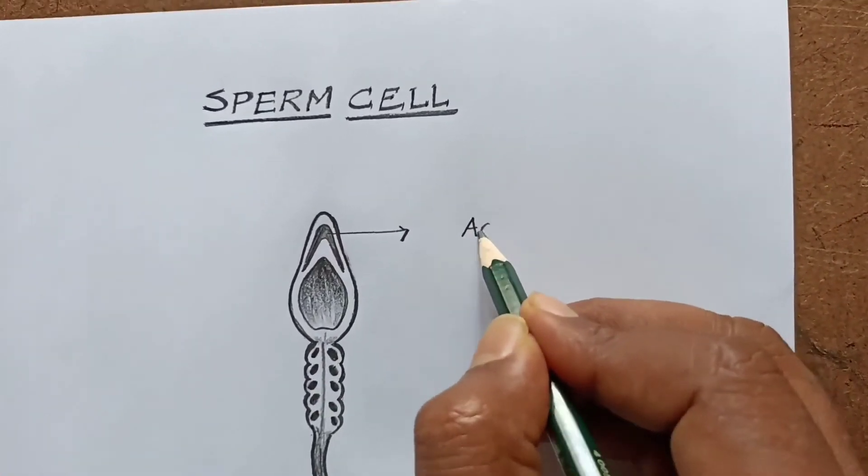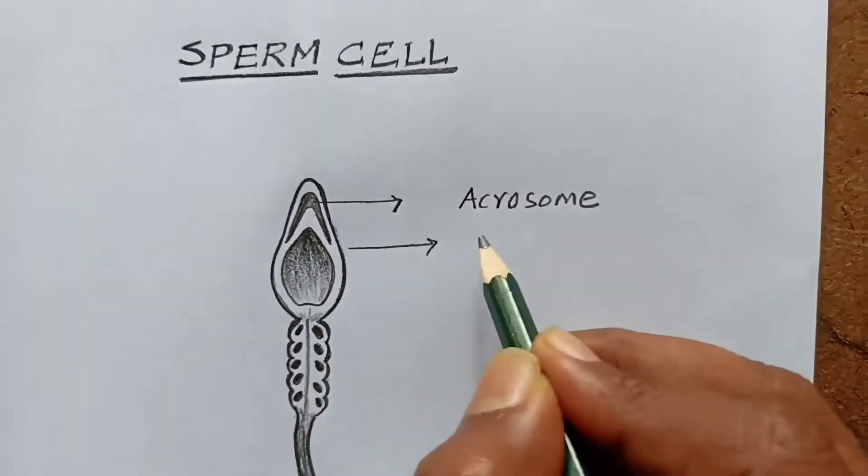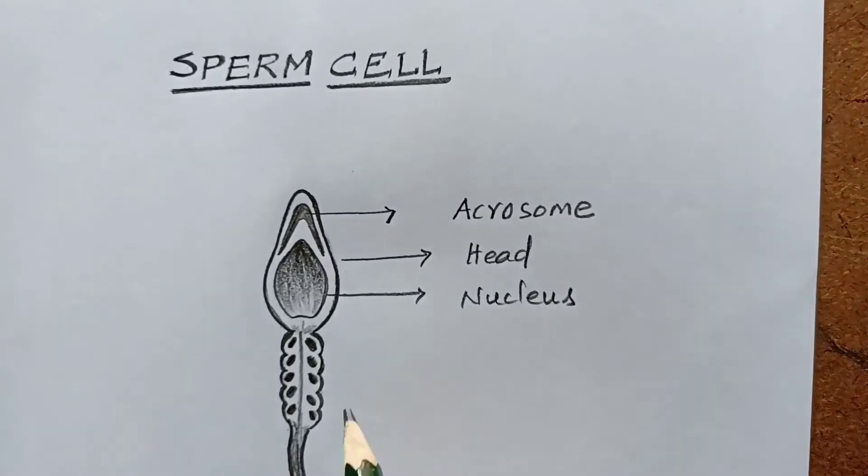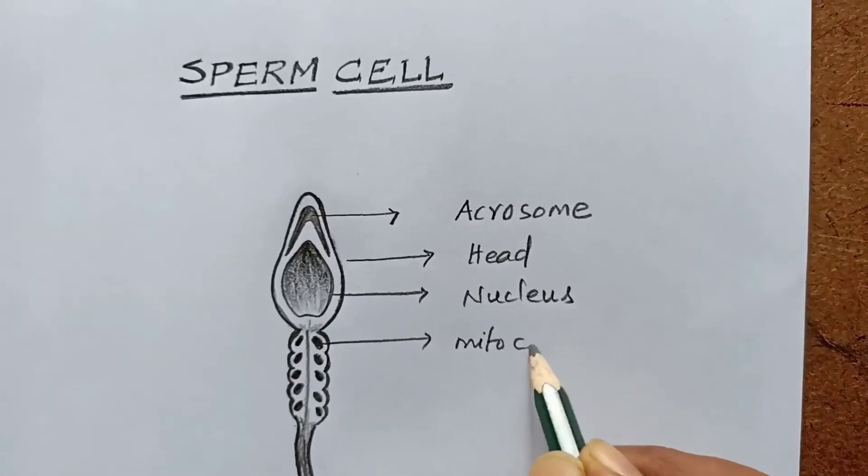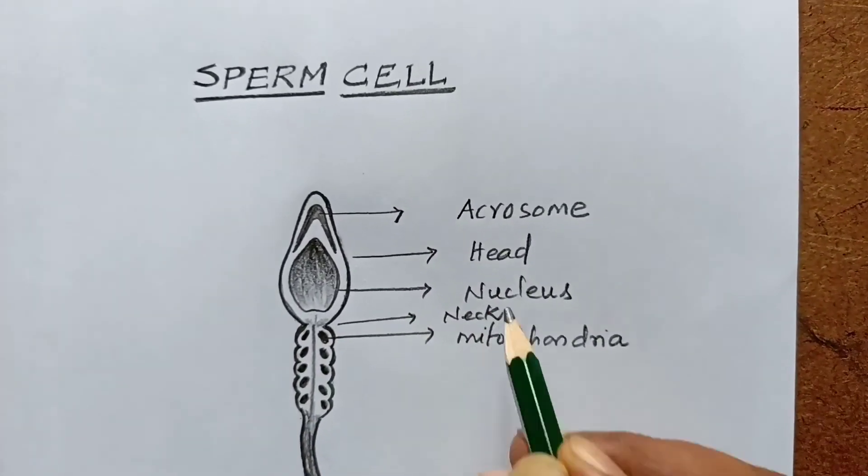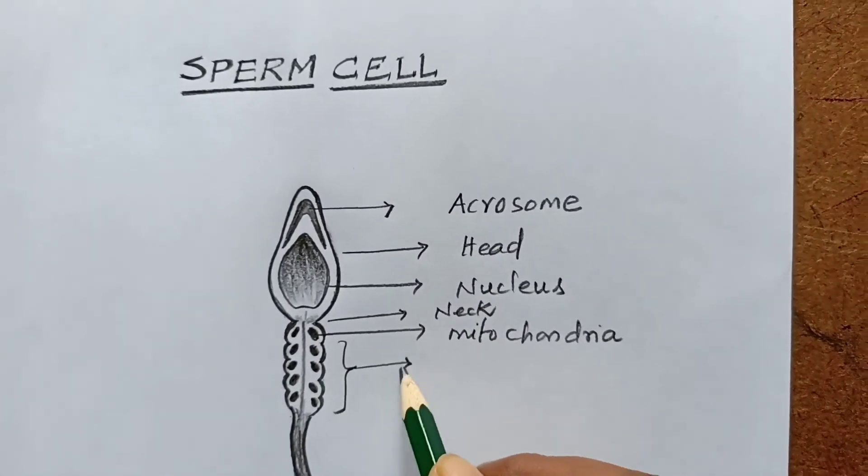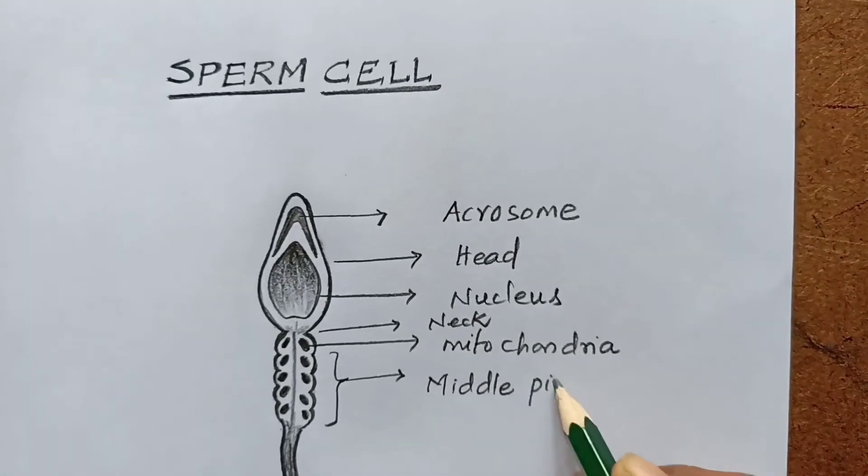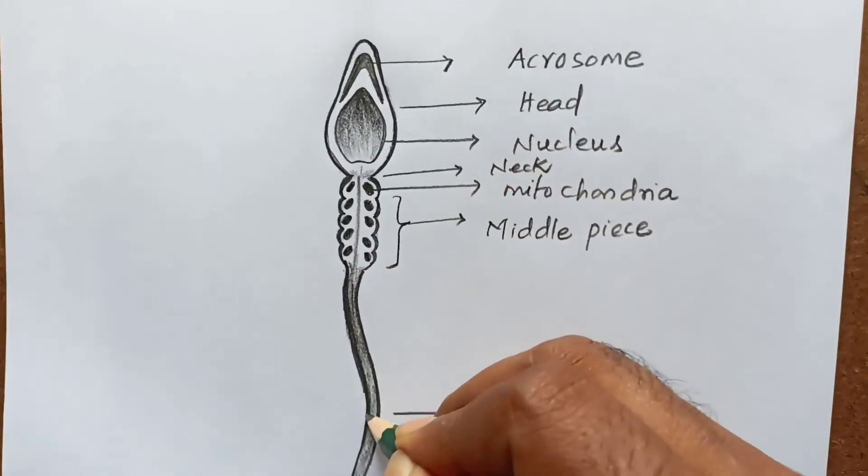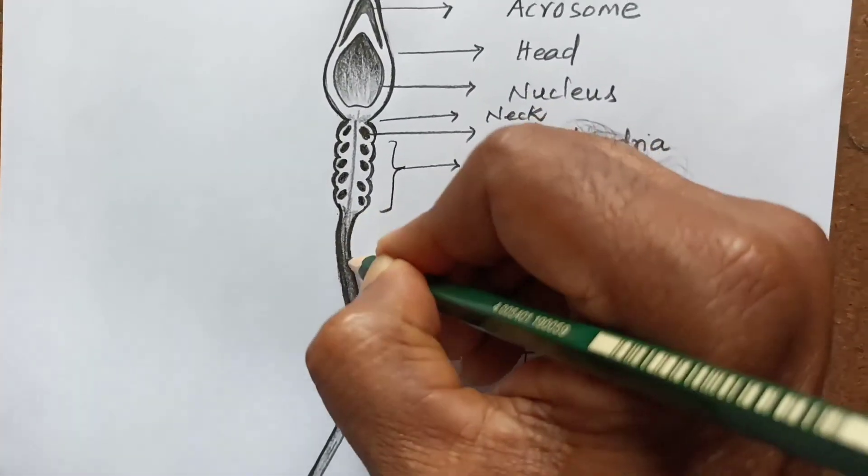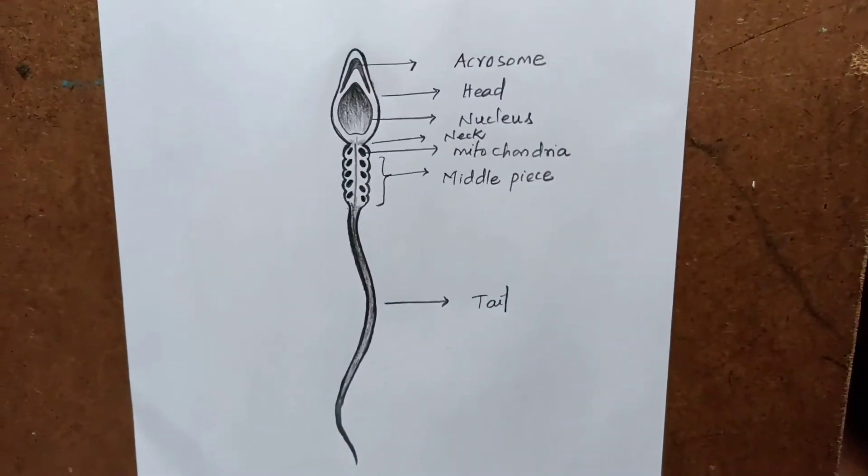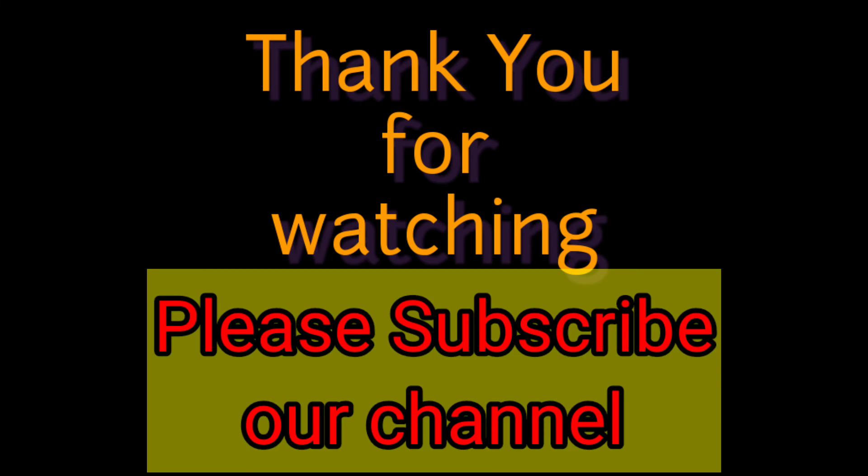Labeling the acrosome. This is our diagram. The diagram is completed. You draw like this. Hope you understood. Thank you for watching. Please subscribe to our channel.